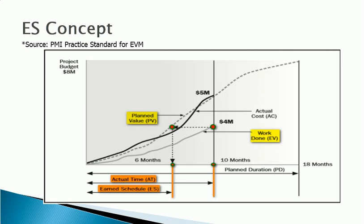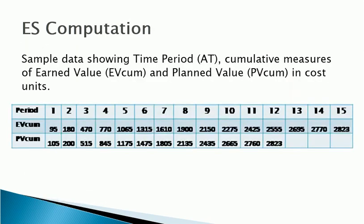As seen here, the value of ES is 6 months. It means the project is behind schedule by 4 months on the status date.